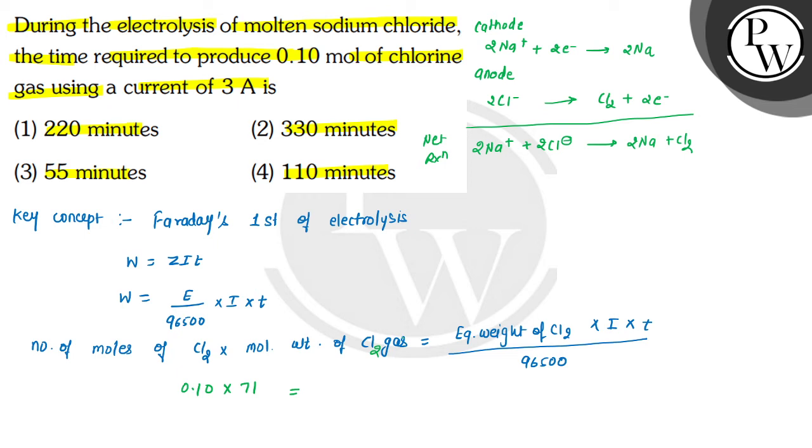Equivalent weight of chlorine is 35.5 multiplied by I. I is current which is given 3 ampere multiplied by T. This we have to calculate divided by 96500. Now after we calculate this value, T will come here. We have 6433.33 seconds.